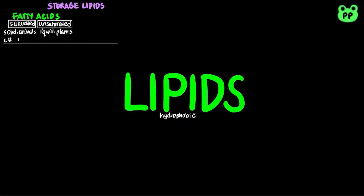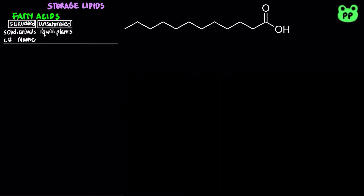The most commonly occurring fatty acids have even numbers of carbon atoms. A 12-carbon saturated fatty acid is known as lauric acid, named after laurel oil that it is found in. Lauric acid is a component of coconut milk, coconut oil, and palm kernel oil.